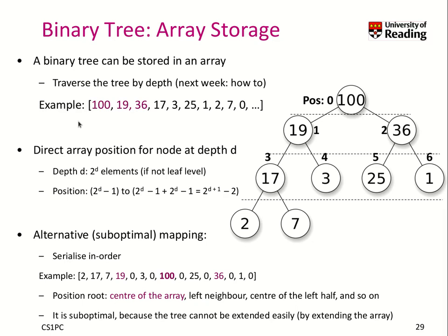We can store a binary tree very conveniently into an array. All we need to do is traverse the tree by depth and then pull down the values. We start at depth 0 and put down 100 as the first element in the array. Then we go to the next level and put down 19 and 36, then 17, 3, 25, 1, 2, and 7.